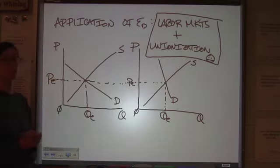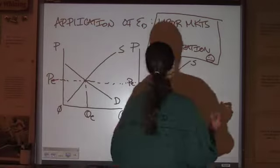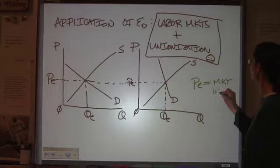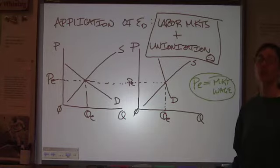When we look at the equilibrium price of labor, the equilibrium price is going to be the market wage. How much are people actually going to get paid?